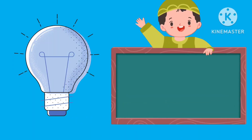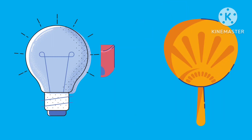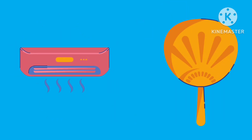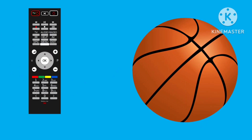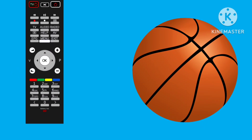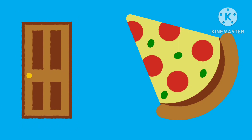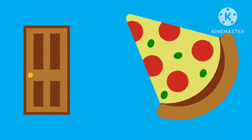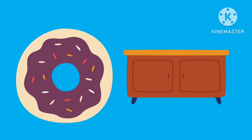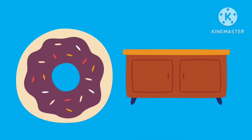This board is a rectangle. Look at this AC — AC also has a rectangle shape. Remote is also a rectangle. This door also has a rectangle shape. This desk also has a rectangle shape.